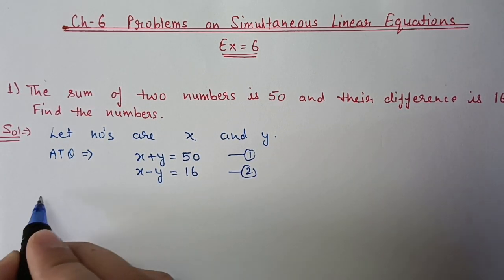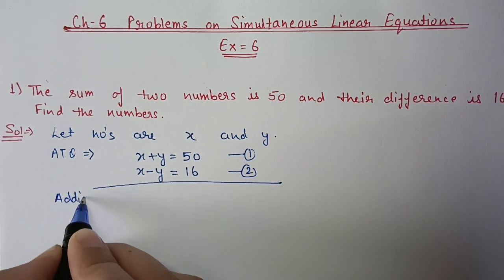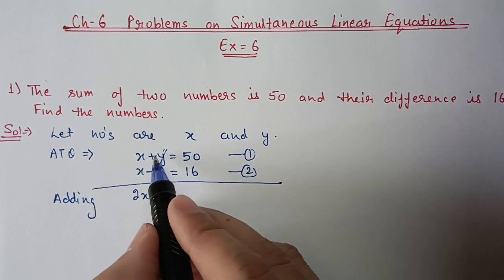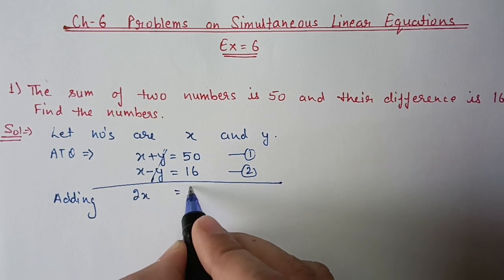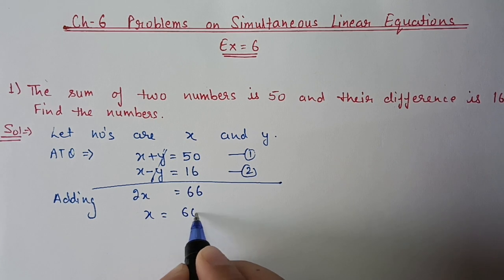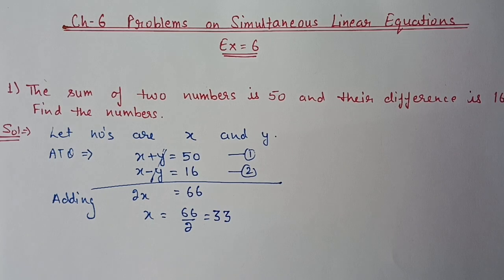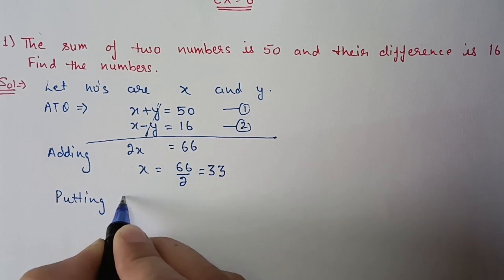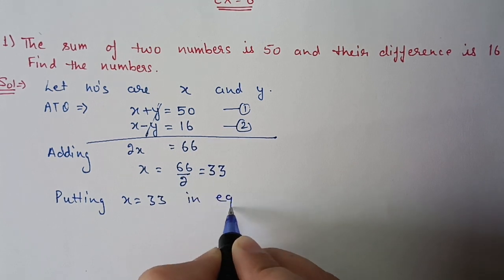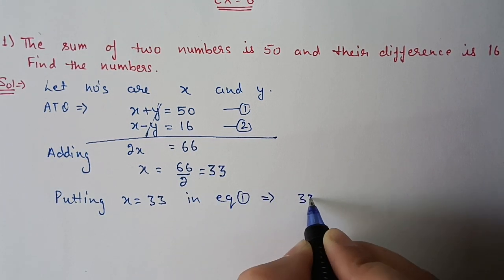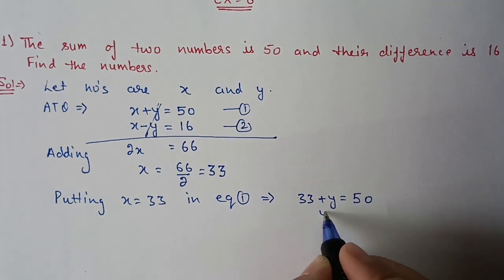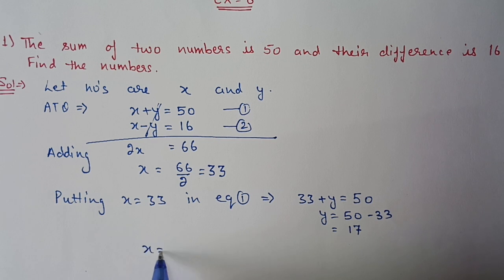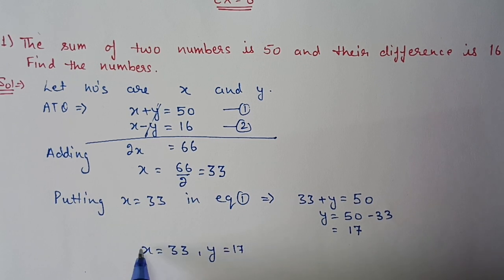These are very easy equations. If we add the two equations, x + x gives 2x, and +y and −y cancel out. On the right side, 50 + 16 = 66, so x = 66 ÷ 2 = 33. Substituting x = 33 in equation 1: 33 + y = 50, so y = 50 − 33 = 17. Therefore x = 33 and y = 17.